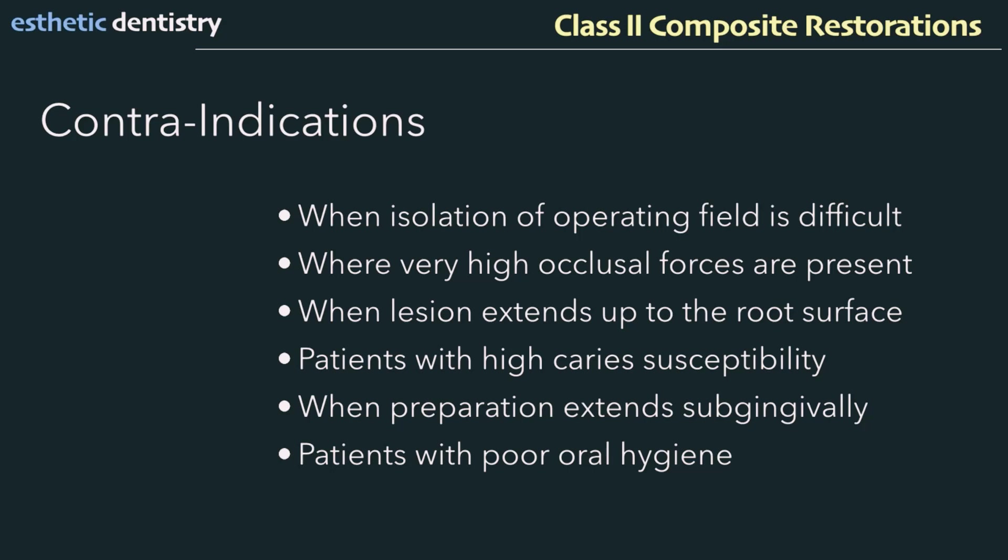When the operating site cannot be appropriately isolated, that is among the contraindications, because there will be minimal curing in the gingival region and chances of bond failure. It is always contraindicated to use composites in such situations; instead try a sandwich technique using resin-modified glass ionomer prior to any composite. Whenever there are high occlusal forces due to parafunctional habits, this is also contraindicated. Composites are contraindicated in patients with high caries susceptibility and poor oral hygiene.